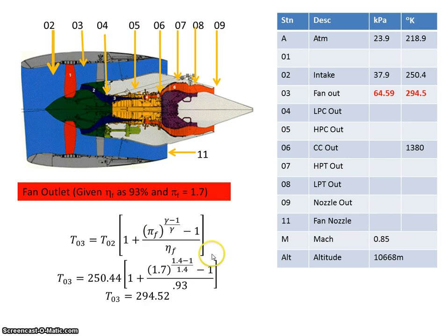The temperature at the output of the fan, this is the equation we had in a previous video. I'll plug the numbers in, so I have 250.452, the pressure ratio of 1.7, and the efficiency of the fan, 93%. Plug those in and I get a value of 294.52 kilopascals.